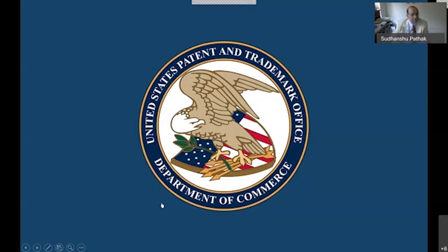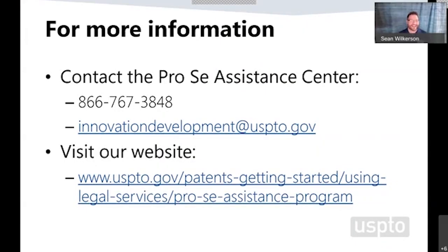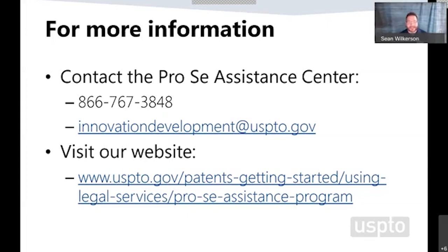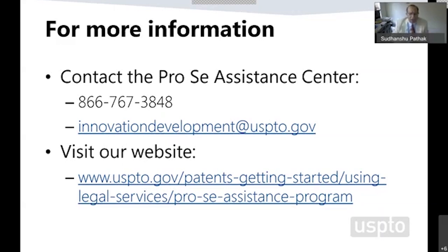Q: Can the 12-month term of the provisional application be extended or renewed? No, it cannot. This is a common misunderstanding — many small inventors and entrepreneurs will contact us saying their provisional application is expiring tomorrow and ask if it can be extended while they finish writing their non-provisional. Unfortunately, we have no discretion in the office. It is a statutory requirement: it expires and is not renewable after 12 months.